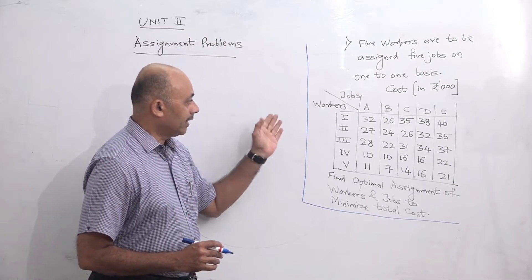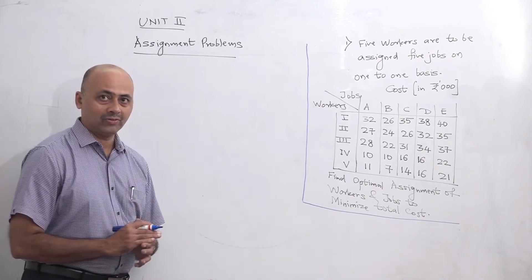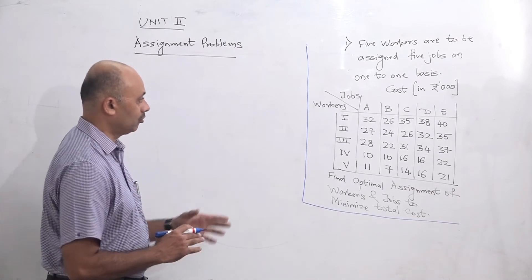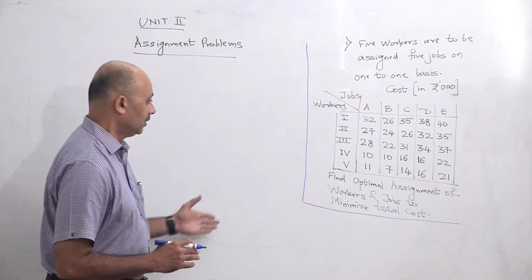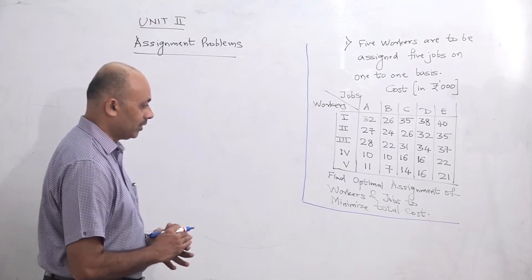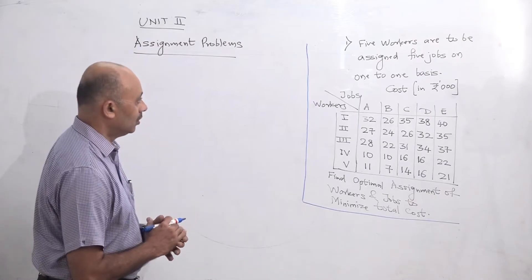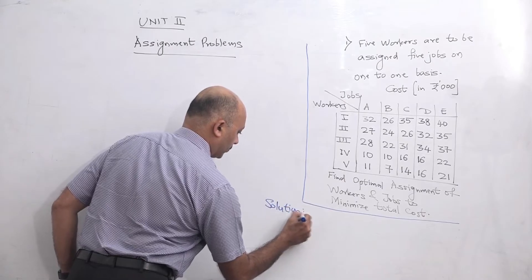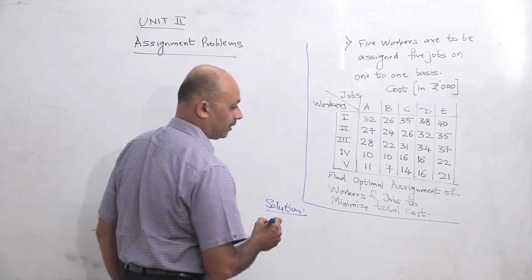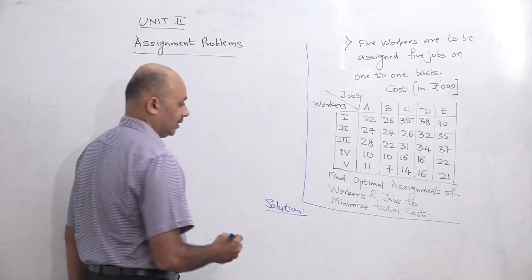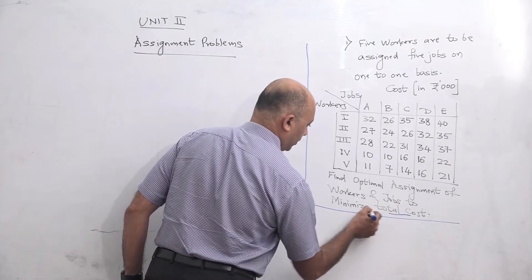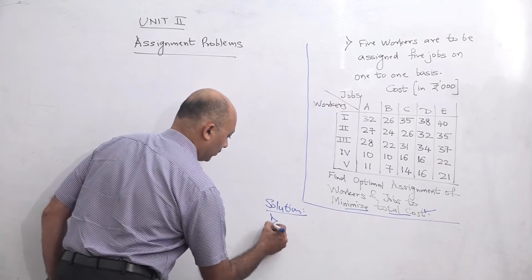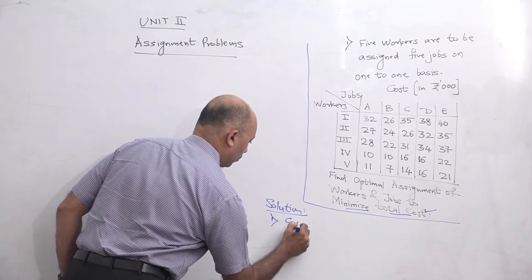5 workers are there and they have to be assigned 5 jobs on a 1-to-1 basis. The cost matrix is given; cost is in rupees 1000. The cost for each worker and each job combination is given, and we have to find the optimal assignment of workers and jobs to minimize the total cost. The first step is to check whether it is a minimization or maximization problem. Here it is mentioned that minimization of total cost, so whenever cost is mentioned, the problem is of minimization — it is a cost minimization problem.